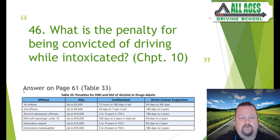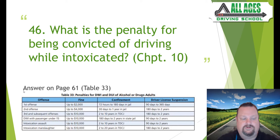Question number forty-six: what is the penalty for being convicted of driving while intoxicated? Chapter 10, page 61, table 33. For adults, the first DWI offense: fine up to $2,000, 72 hours to 180 days in jail, 90-day to 365-day license suspension. As each offense increases, fines go up, jail time increases, and suspended license duration can extend up to two years.